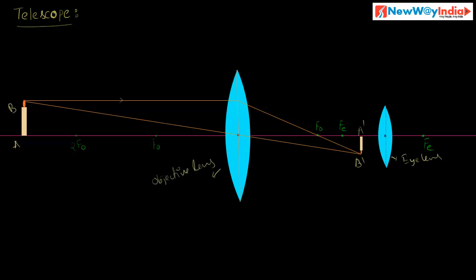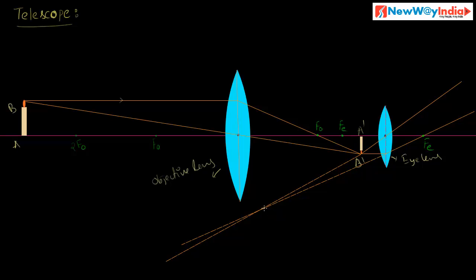Where is the final image formed? Extend these lines — one ray is parallel to the principal axis, and after refraction it passes through the principal focus of the eye lens. Another ray passes through the optical center of the eye lens. These two rays do not meet anywhere, but if you extend them, they meet at a point. These extended rays diverge from this point, so the image is formed here on the same side of the eye lens. It is a virtual image because it is formed on the same side of the object.